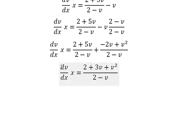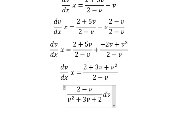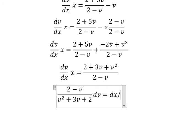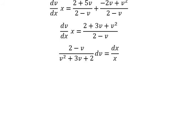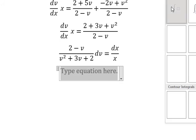This one we put on the left, dx, and x we put on the right. So we will have 2 minus v over v squared plus 3v plus 2 dv equals to dx over x. Next we put the integration for both sides.